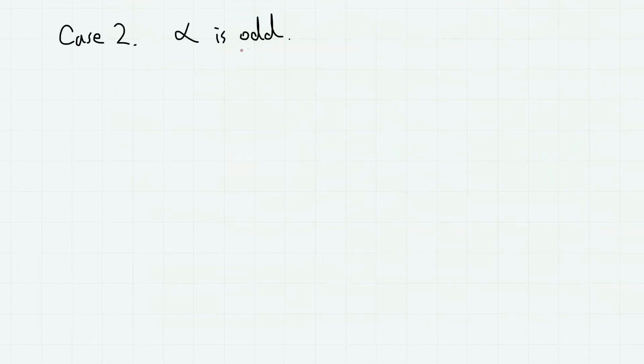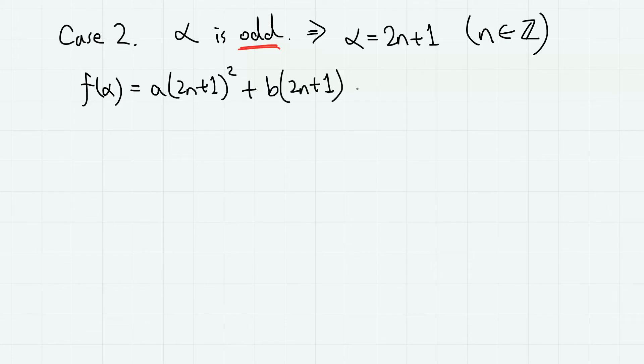For the next case, when alpha is odd, we can write alpha as 2n plus 1 for some integer n. Then, f(alpha) is given as a(alpha)², so a(2n plus 1)² plus b(alpha), so b(2n plus 1), then plus c. And if we expand this,